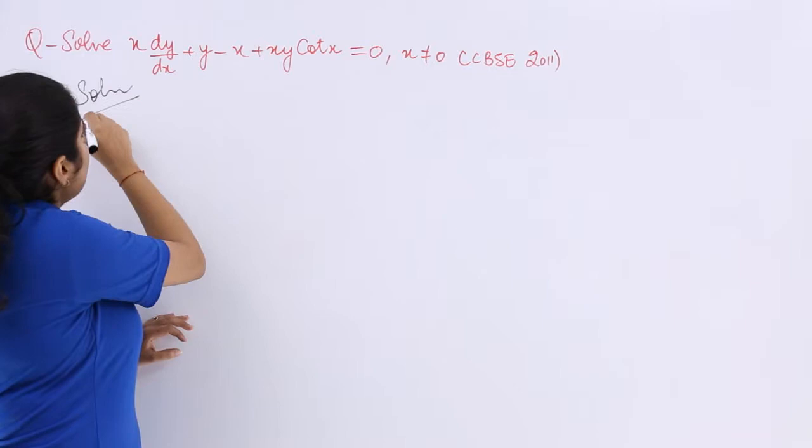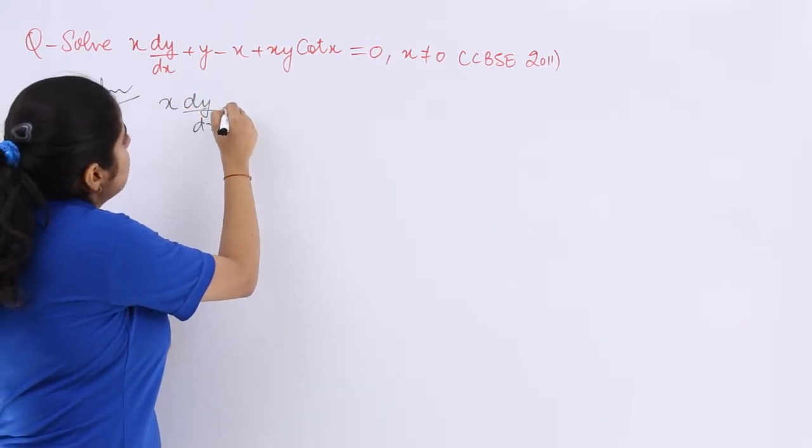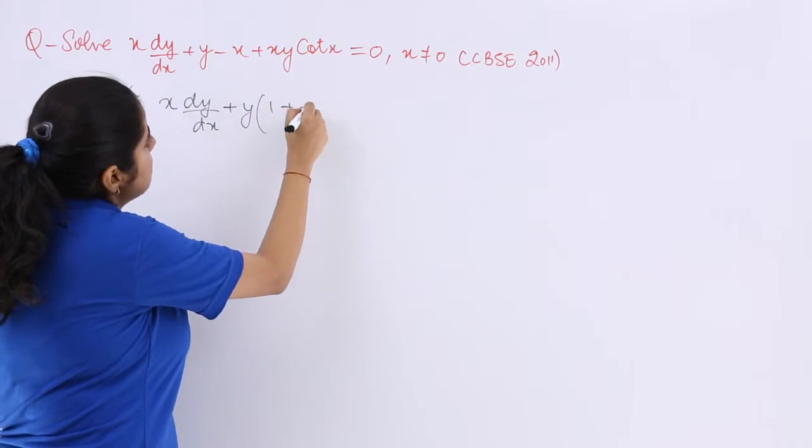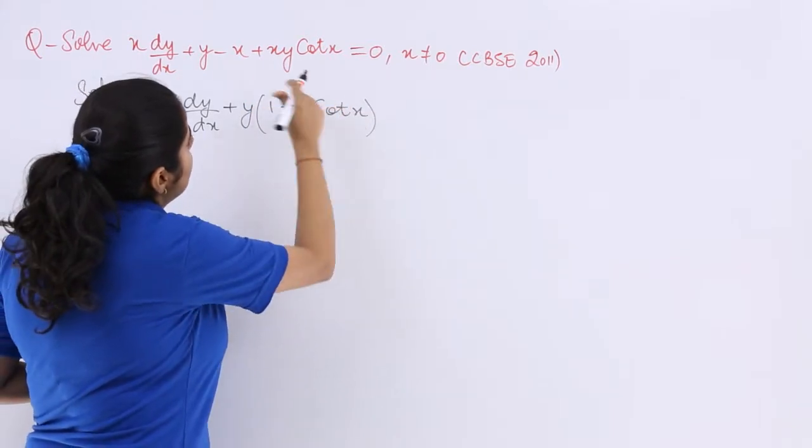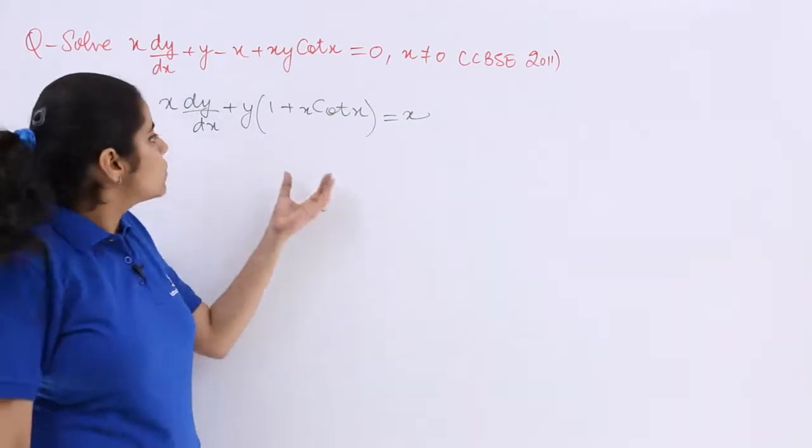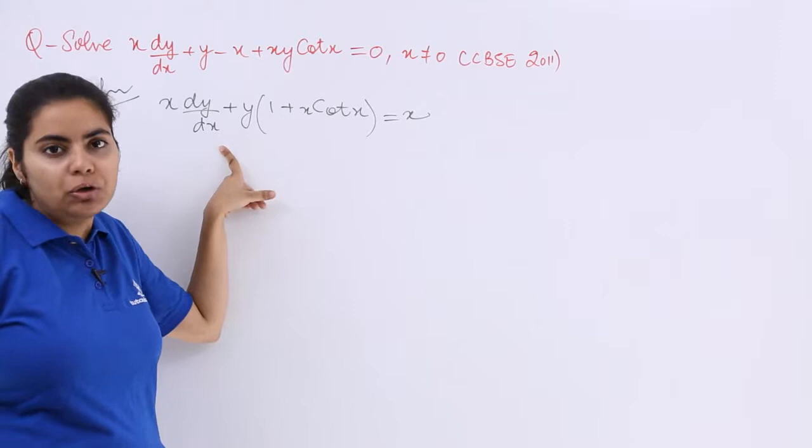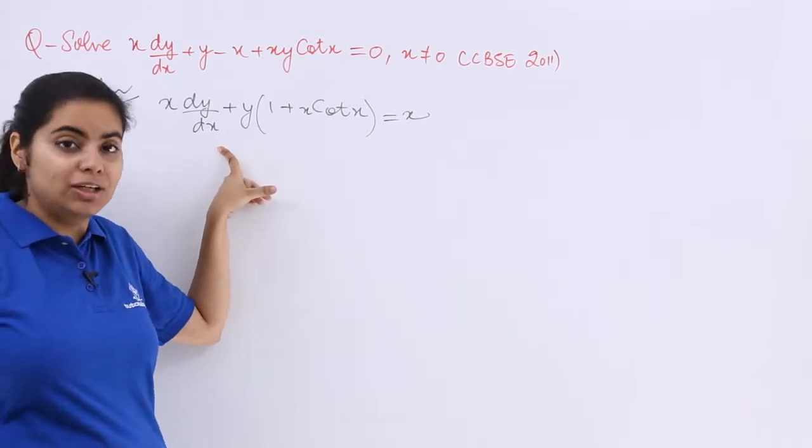So I write solution and my x dy/dx remains as it is, and plus y is common 1 plus x cot x is the situation, and minus x goes to the other side to become plus x. Now see, if I have to get rid of this coefficient of dy/dx, I have to divide throughout by x.